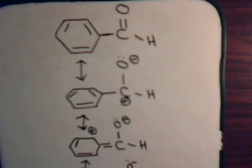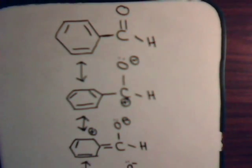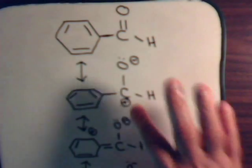These are the different canonical structures that can be formed. We had the original, then this carbon with an empty p orbital and a positive charge, then this carbon with an empty p orbital and a positive charge, and this carbon with an empty p orbital and a positive charge.